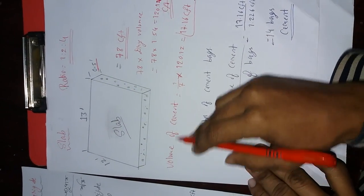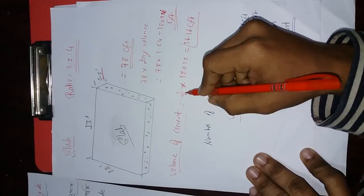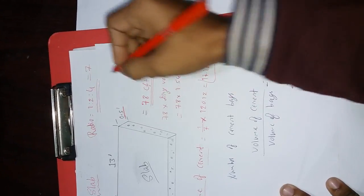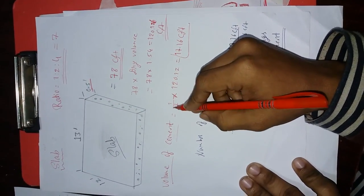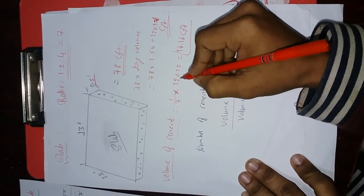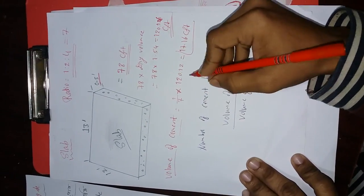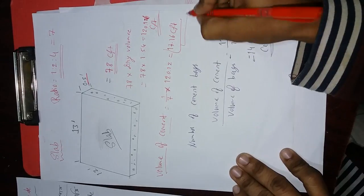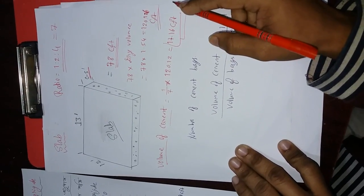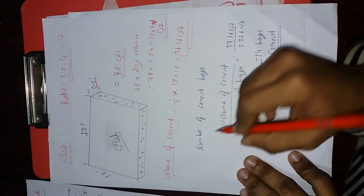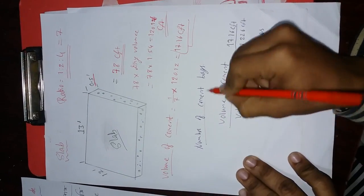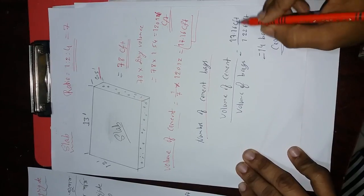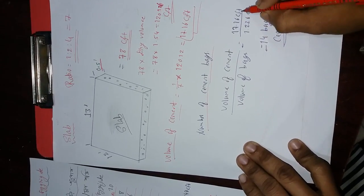Volume of cement: 1.5.4.4.7. The result is 17.16 cft, which is a small amount of cement. So we have a number of cement bags. We have a volume of cement of 17.16 cft.